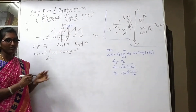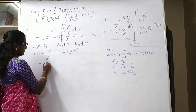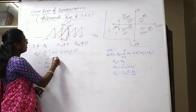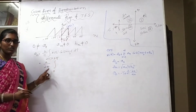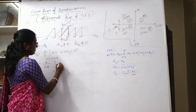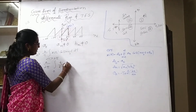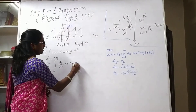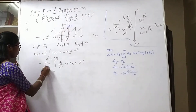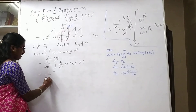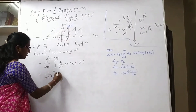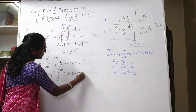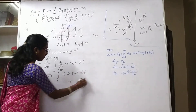Now we solve for Aₙ. The formula is (2/T)∫x(t)cos(nω₀t)dt. With T = 2π and x(t) = t/(2π), this becomes (1/4π²)∫₀²π t·cos(nt) dt. We need to solve the integral of t·cos(nt)dt.